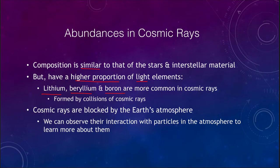When we form helium fusion in stars, you have three helium atoms fusing to form one carbon atom. So three helium atoms combine together and we jump over these elements. That's because if we try to fuse two helium atoms together, the product is unstable and immediately breaks apart. So the only way to form heavier elements in stars is to skip over these.